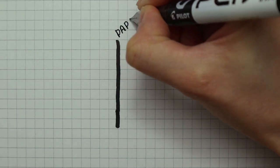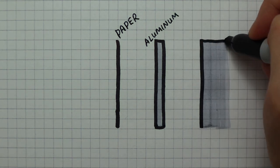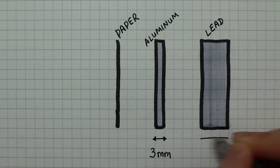Here is a piece of paper. Behind it, we have a thin piece of aluminum. And behind that, we have some thick lead that is 15 centimeters thick.